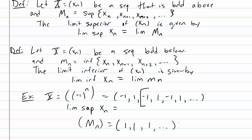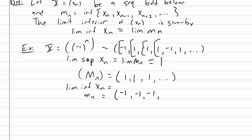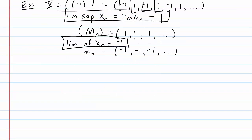Thus the lim sup is the limit of M_n, which in this case is 1. Similarly, the lim inf of x_n is the limit of little m_n, the infimum of each successive tail. Starting from any point, the infimum is always -1, and as you chop off initial terms the infimum of the remaining terms stays -1. So lim inf = -1 and lim sup = 1.